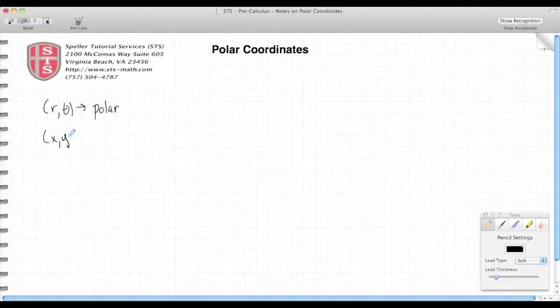And we're going to see how that relates to rectangular coordinates, which are shown with the ordered pair (x, y), where x is your horizontal movement and y is your vertical movement.